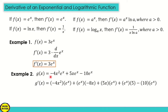Applying the product rule: negative 4x squared times the derivative of e raised to x — which is e raised to x — plus e raised to x times the derivative of negative 4x squared, which is negative 8x. Then applying the product rule to the second term: 5x times the derivative of e raised to x, plus e raised to x times the derivative of 5x, which is 5.